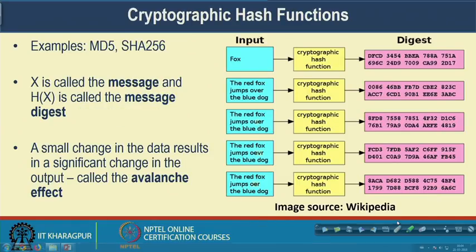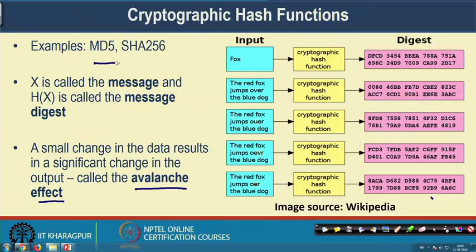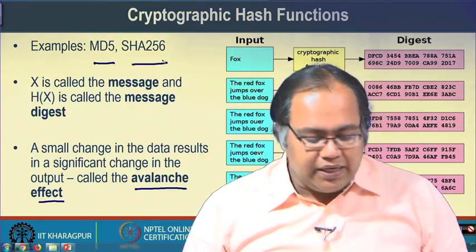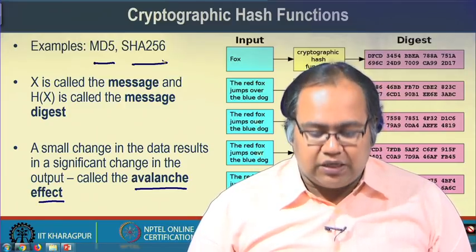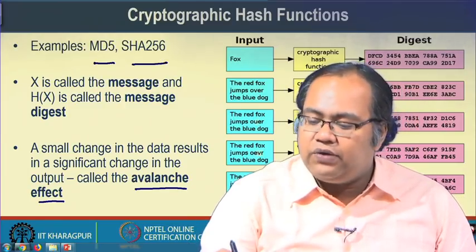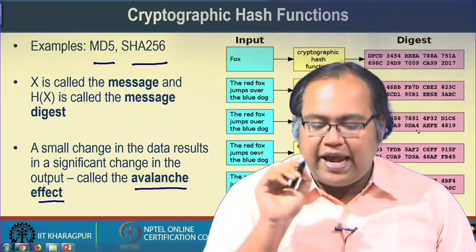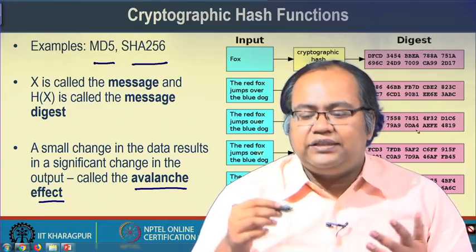Cryptographically secured hash functions have another important property called the avalanche effect. In this context, x is called a message and h(x) is called a message digest. The avalanche effect means that whenever you are computing the digest and you make a small change in the input, you will see a significant change in the digest. For example, whenever the input is 'fox' this is the digest, and whenever you make the input 'the red fox jumps over the blue dog' you get a completely different digest.